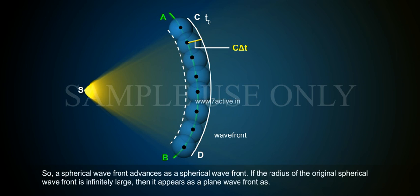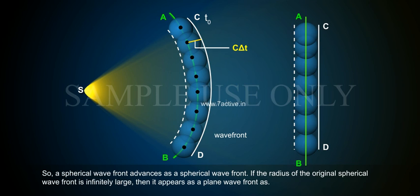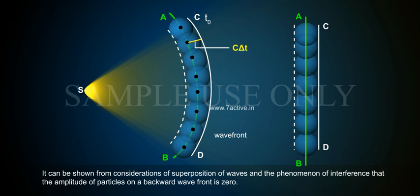So, a spherical wavefront advances as a spherical wavefront. If the radius of the original spherical wavefront is infinitely large, then it appears as a plane wavefront. It can be shown from considerations of superposition of waves and the phenomenon of interference that the amplitude of particles on a backward wavefront is zero.